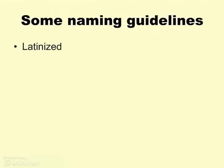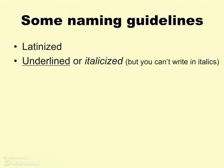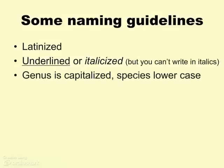First off, they're all Latinized. Whether the root is in another language or not, you will notice that they all end in -us, -es, -is, stuff like that. Whenever you write these down, please make sure that you underline them. If you are typing, you can certainly italicize. Of course, you can't write in italics. The genus is always capitalized. The species is lowercase — if you're starting a sentence with the species name, it is okay to capitalize it, but other than that it's always going to be lowercase.